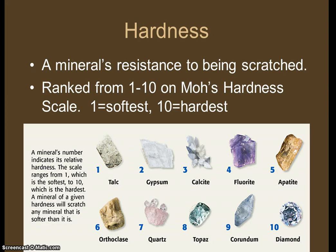Hardness is technically defined as the mineral's resistance to being scratched. We rank it on Mohs hardness scale, which goes from 1 to 10 — 1 is the softest, 10 is the hardest. Certain minerals represent certain numbers: calcite is a 3, quartz is a 7, and talc — used in talcum powder — is a 1 and can be scratched with your fingernail. The hardest known mineral is diamond, and diamond is not always gem quality. Those lower-quality diamonds are used for things like the edges of scalpels and in drill bits.